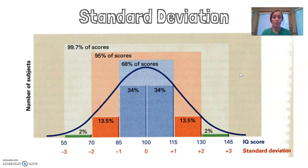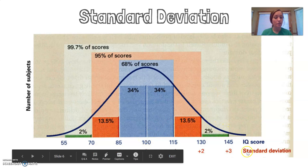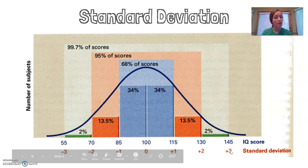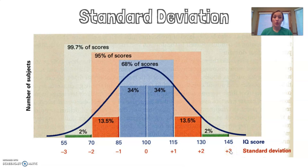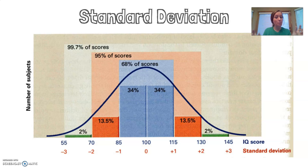With IQ represented on a normal distribution, the average is 100. We have three standard deviations above and three below. With IQ data from roughly 50 to 150, our standard deviations end up being 15 points each — so 15 points from 100 puts us at 115, that's one standard deviation above, and 15 more points puts us at 130.